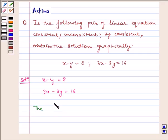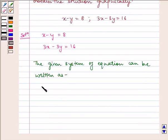The given system of equations can be written as x minus y minus 8 equals 0 and 3x minus 3y minus 16 equals 0.